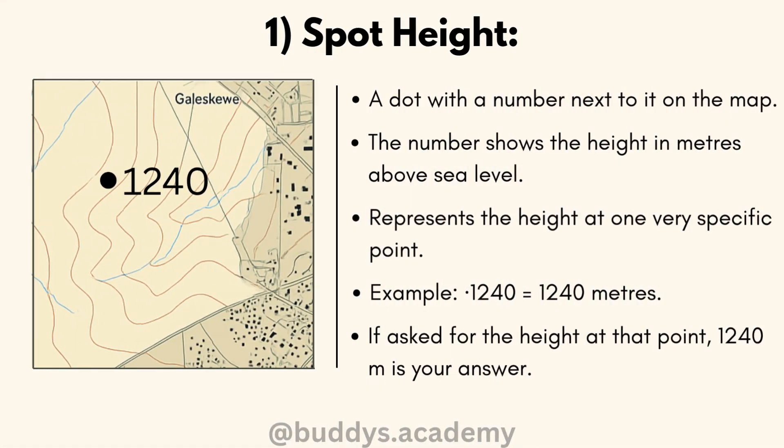In terms of your spot height, it's basically just going to be a dot with a number next to it, and that number represents your height for a very specific point in meters. In our example, the number next to the dot is 1240, which represents 1240 meters. So if you are asked for height at a specific point, that will be your answer.